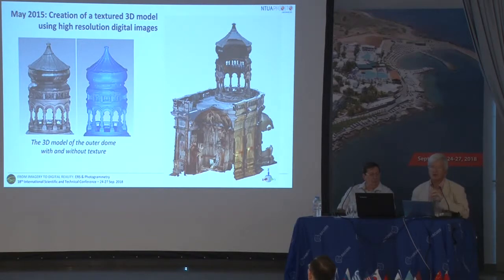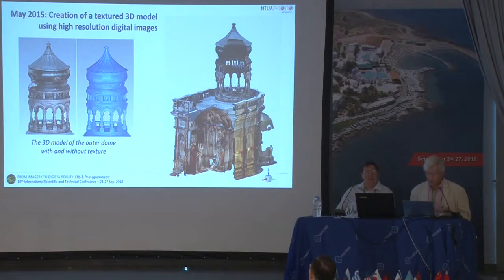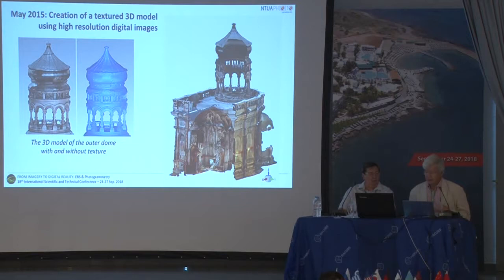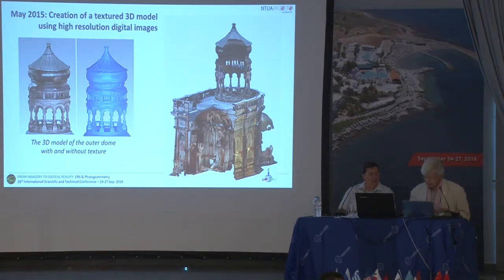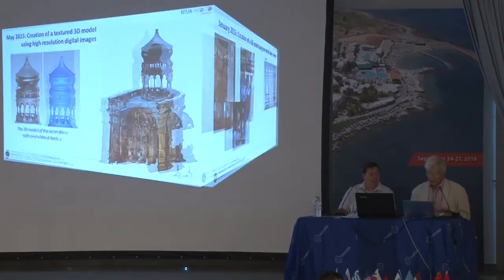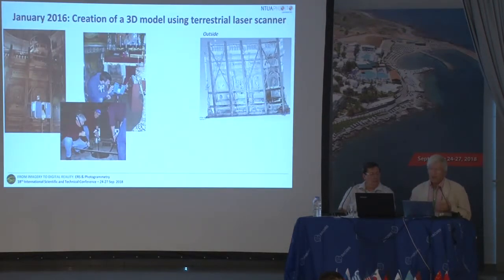We started by producing a 3D model of the situation of the Holy Edicule as it was from May 2015 to January 2016. We used image-based modeling — automated photogrammetric algorithms — to produce this 3D model. We also complemented these measurements with laser scanning in January 2016.